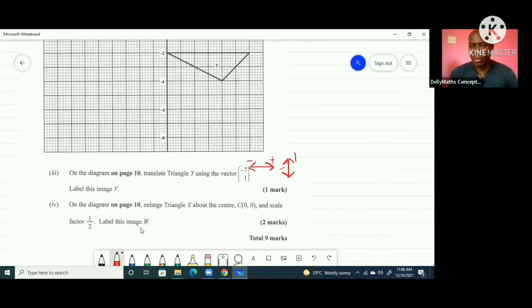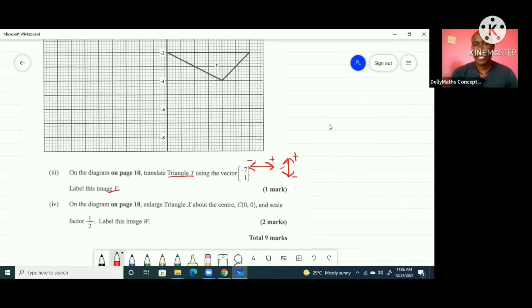When we get negative 7, we're going to go to the left 7 units and positive 1, we're going to go up 1. We're moving triangle Y and when we're done, we're going to label it V. So triangle Y right here. In translating, we're going to translate all the points the same way.